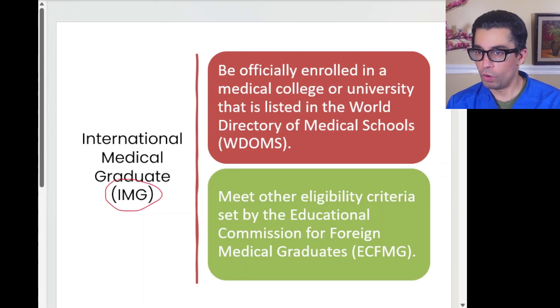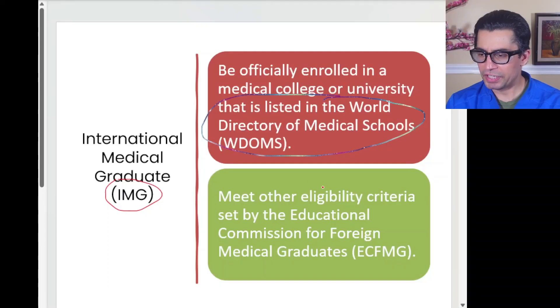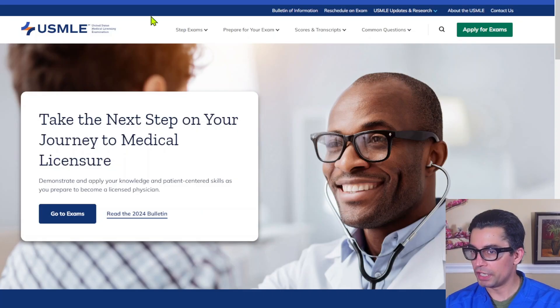For international medical graduates, your college or university needs to be listed in the World Directory of Medical Schools. This is important — sometimes colleges don't maintain their accreditation and fall out, which has happened recently. Make sure your college stays up to date, and keep in touch with the ECFMG if there are any changes to these criteria.